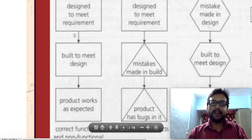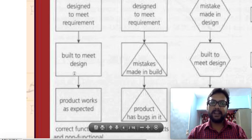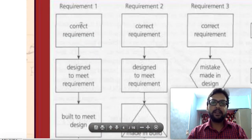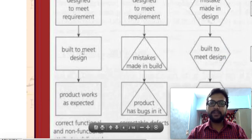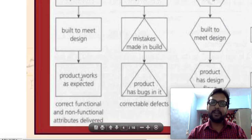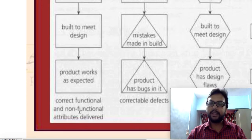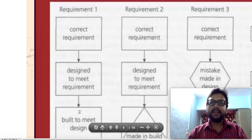If the requirements are correct, then the software or code we develop based on that design is also going to be correct, and if the design is correct, the final product is going to be correct. So if the design meets requirements and software is built based on that design, the final output is correct — correct functional and non-functional attributes are delivered. We don't find any mistake here because we followed the early testing approach.